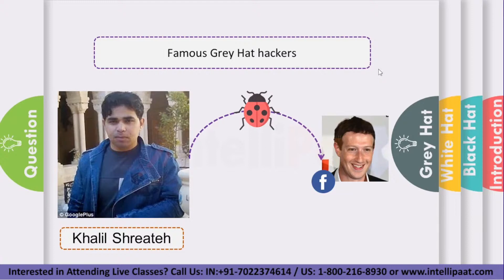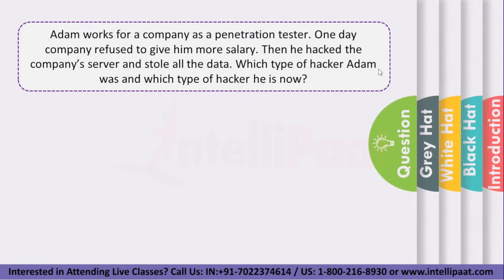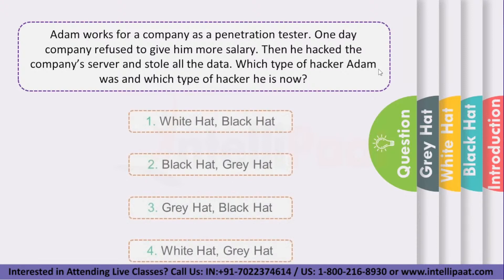Now that we know what black hat, grey hat and white hat hackers are, here is a quiz question. Adam is a guy who works for a company as a penetration tester. One day the company refused to give him more salary, so he hacked the company server and stole all the data. Which type of hacker was Adam, and which type of hacker is he now? Options: 1. White hat and black hat. 2. Black hat and grey hat. 3. Grey hat and black hat. 4. White hat and grey hat. Please put your answers in the comment section and we will tell you the correct answer after some time.